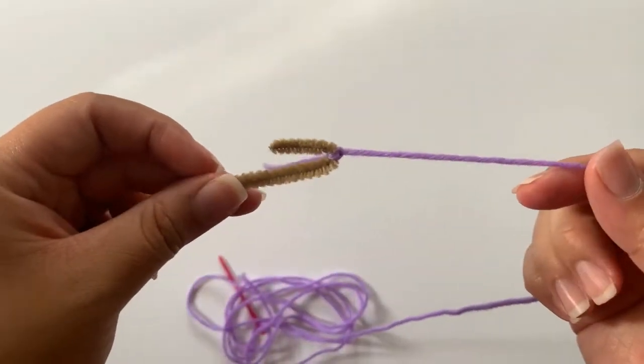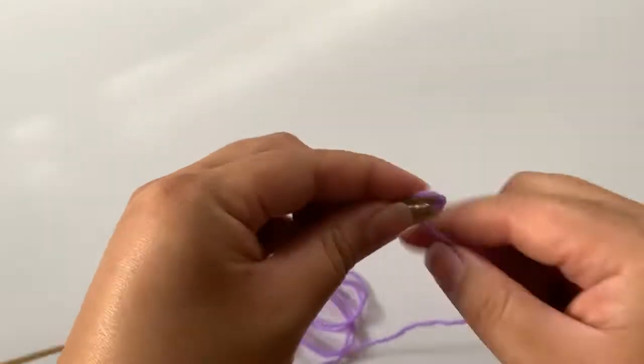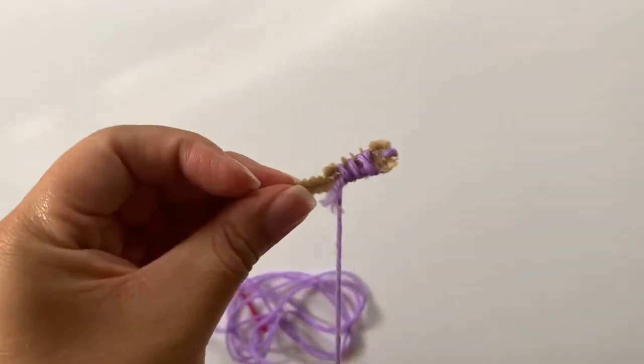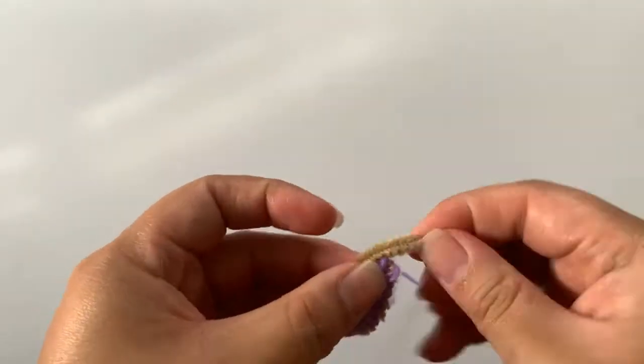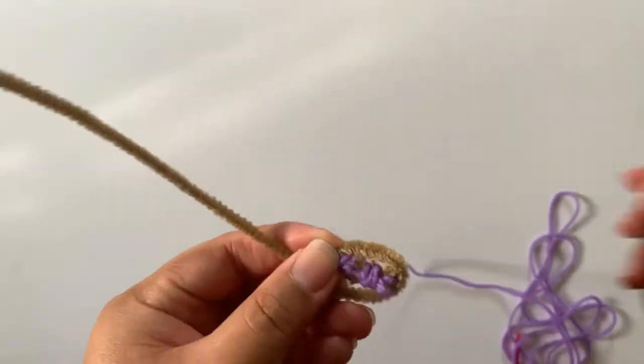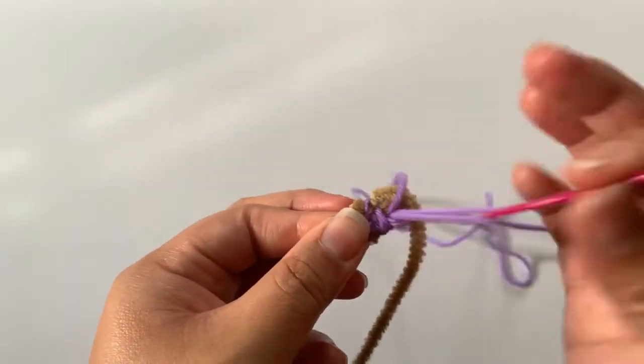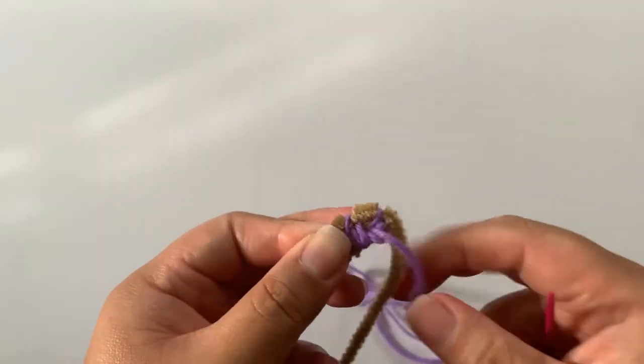Next wrap the yarn around the bent end of the pipe cleaner to help prevent any gaps in the bottom of the basket. This style of weaving is inspired by coil basket weaving. We'll start by wrapping the pipe cleaner around the existing center and then sewing it into place.